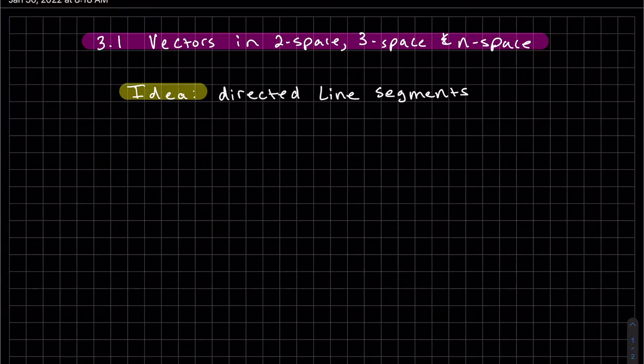The idea of a vector is that it's basically a directed line segment. So vectors have direction and magnitude, so it has a length. That's why we call it a line segment. The directed line segment fits perfectly.